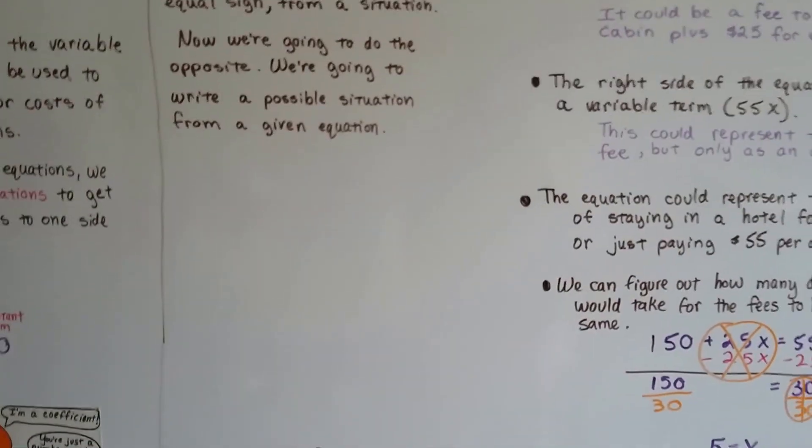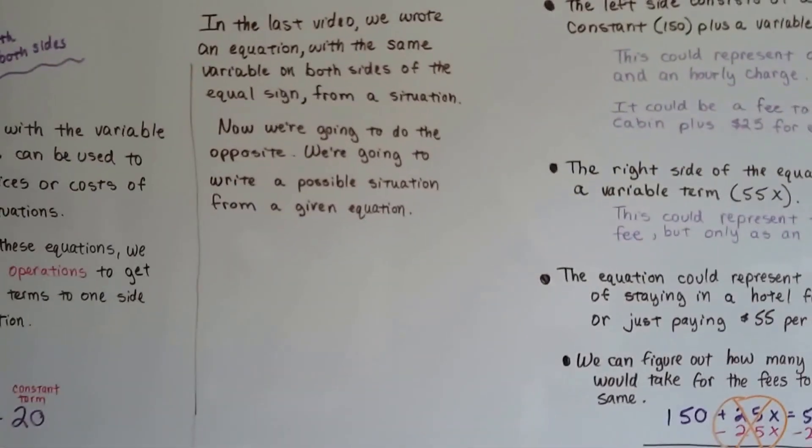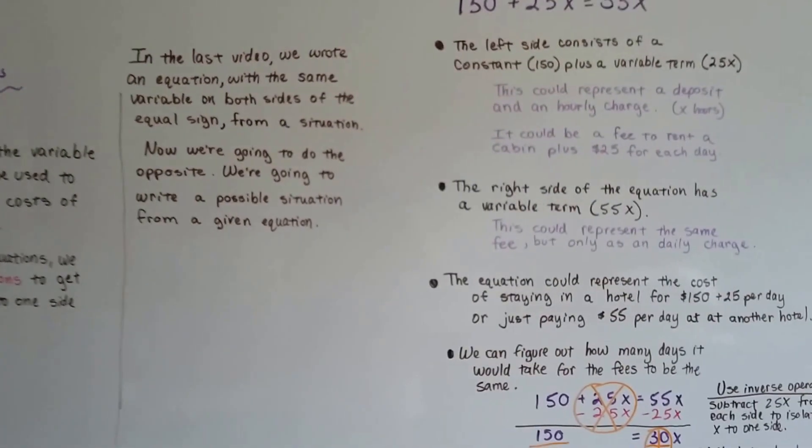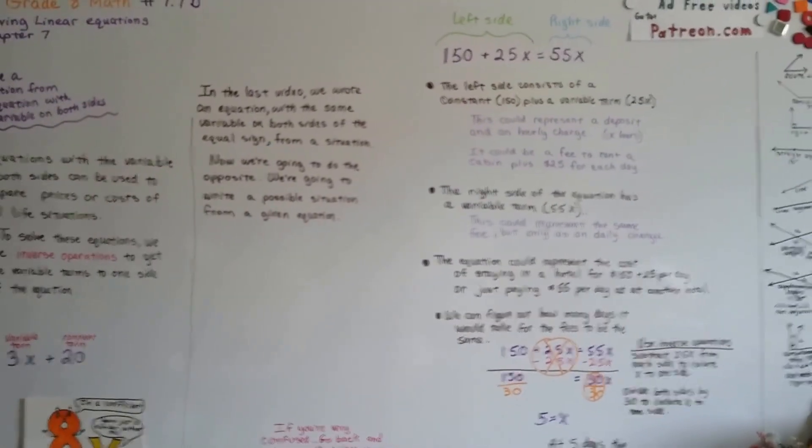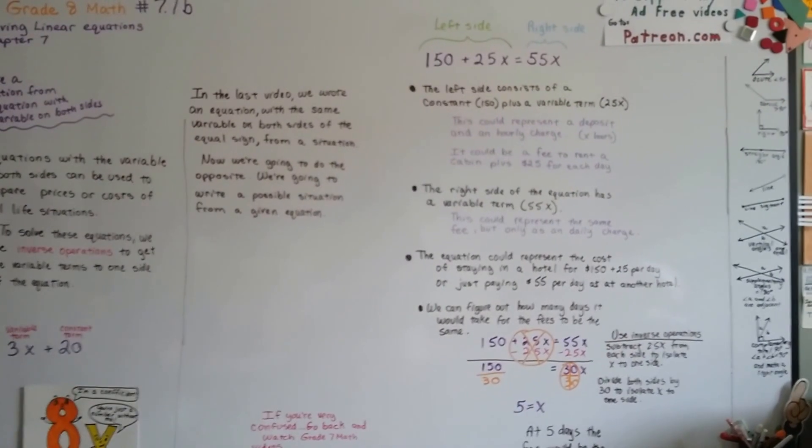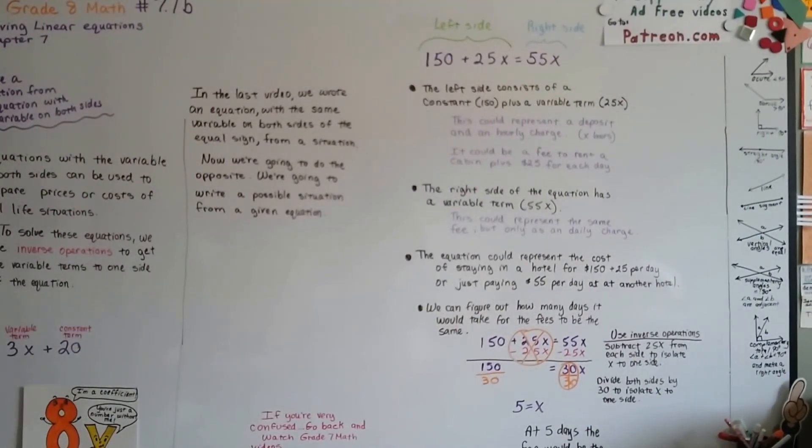We're going to continue on and we're going to talk about writing equations from descriptions, from just like a short sentence description, seeing if we can write an equation from that. And that'll be 7.1c.